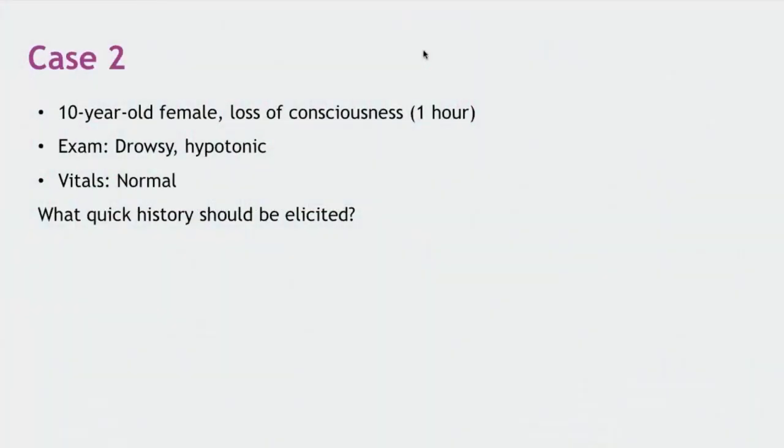In this case, a 10-year-old female presented with loss of consciousness for the past one hour. On examination, she is drowsy, she is hypotonic. However, her vitals are normal. So an unconscious child, very common presentation in an emergency situation. What quick history should be elicited when you encounter a comatose or an unconscious child in emergency?